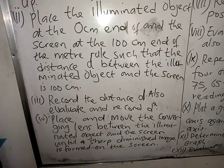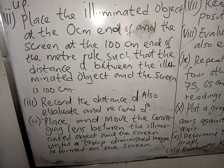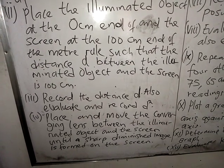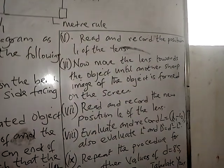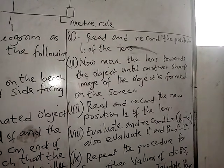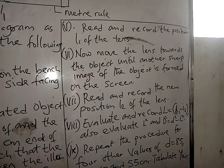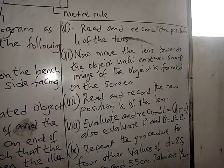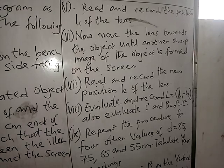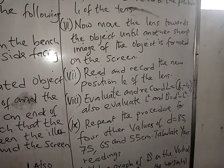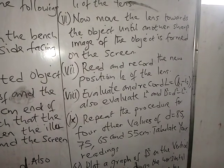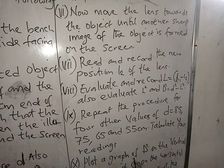Also evaluate and record D squared. Place and move the converging lens between the illuminated object and the screen until a sharp diminished image is formed on the screen. Five: record and read the position L1 of the lens. Six: move the lens towards the object until another sharp image is formed on the screen. Seven: read and record the new position L2 of the lens. Evaluate and record L equals L1 minus L2, also evaluate L squared and d squared equals D squared minus L squared.